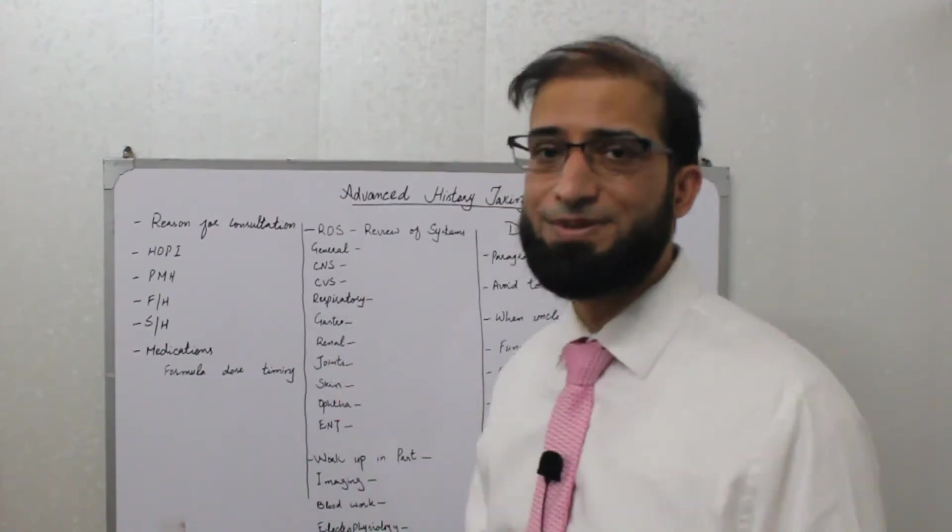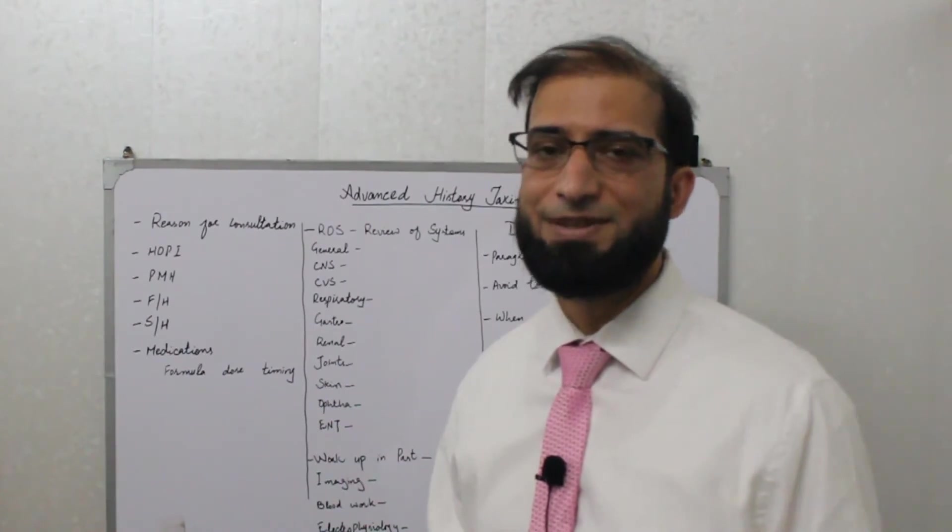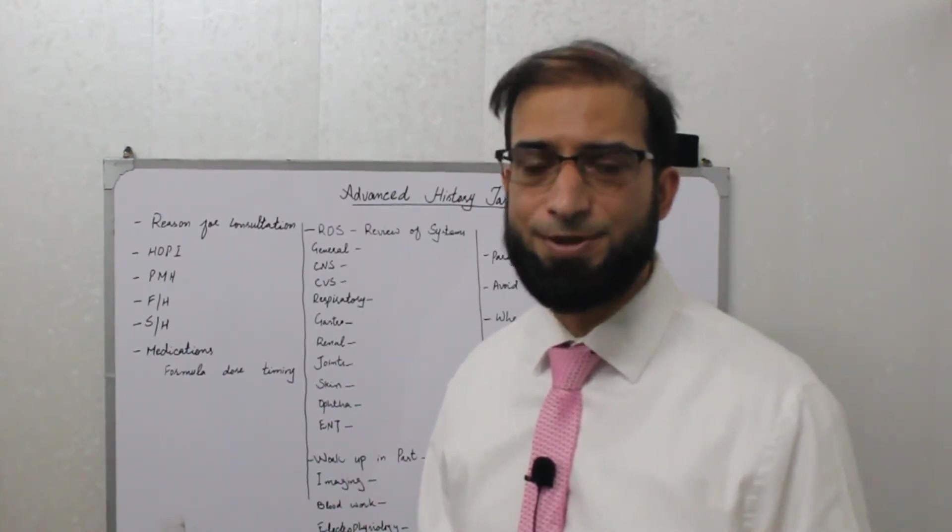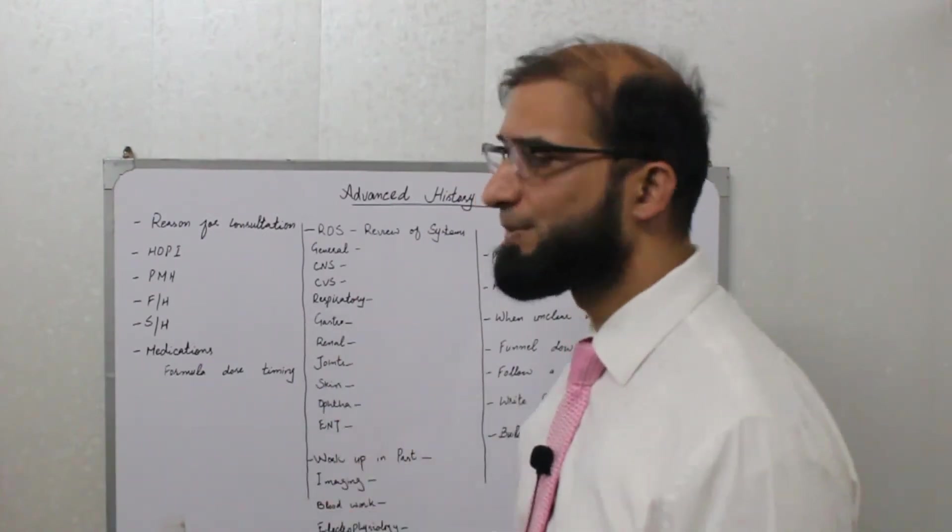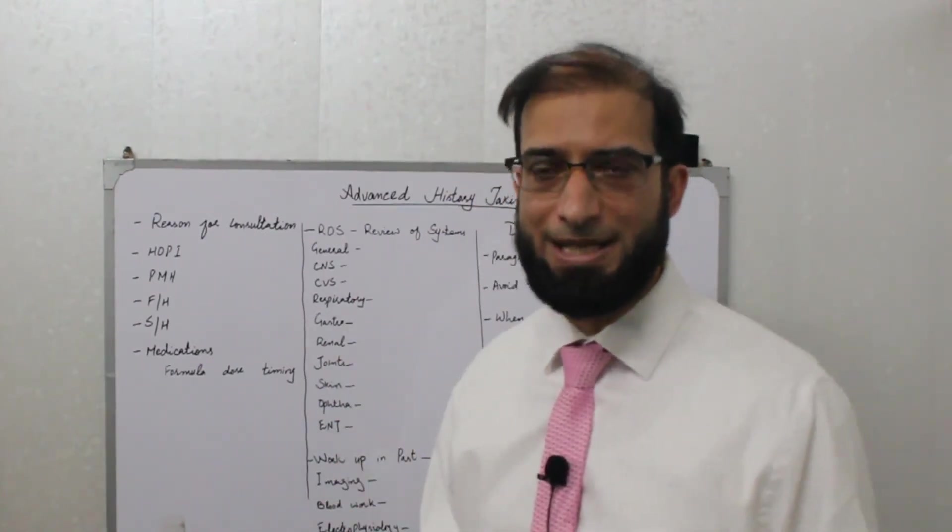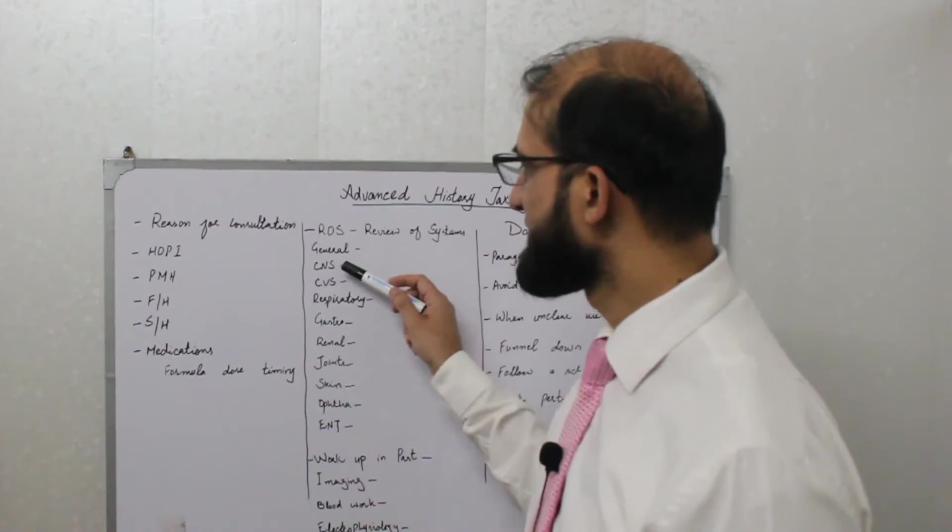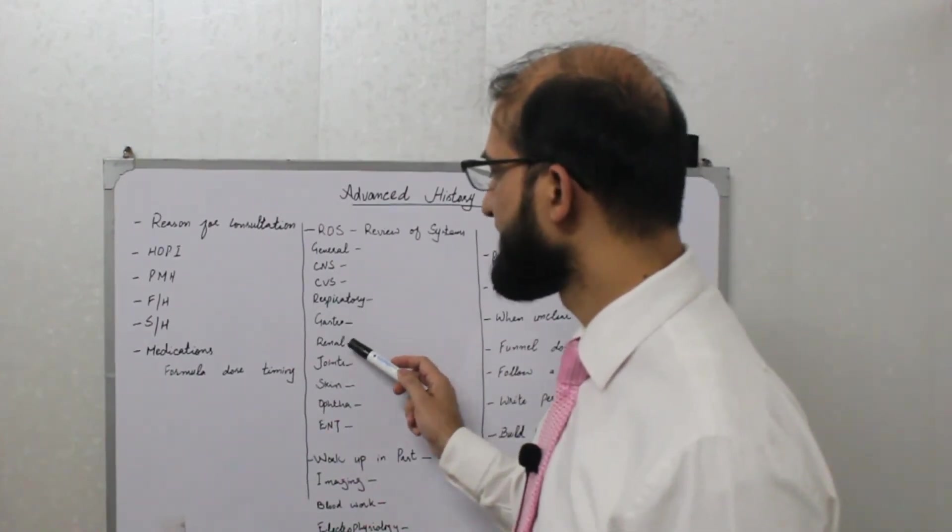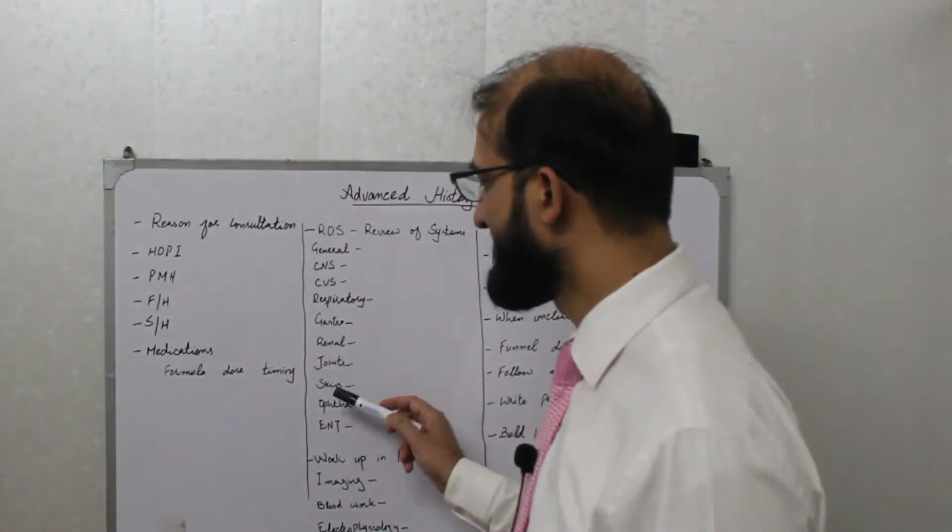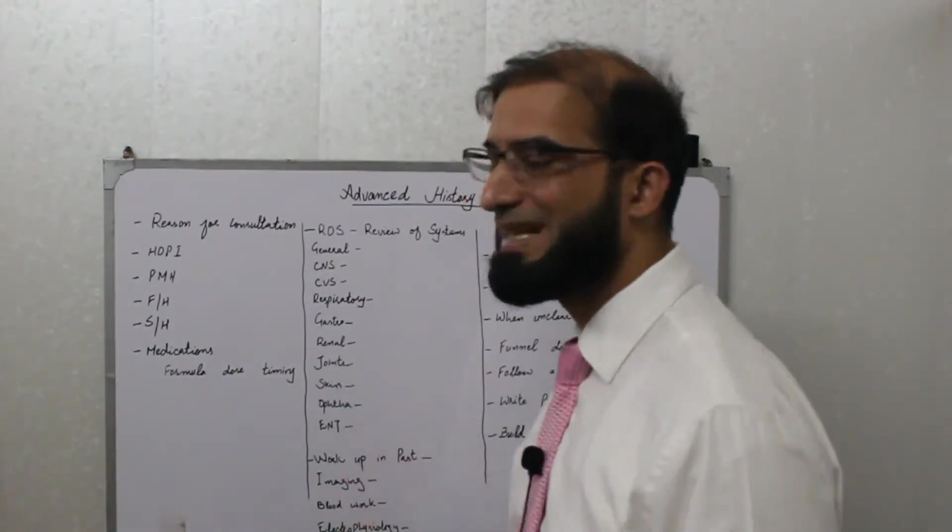So it could be the general symptoms is what we usually start with, if there is any weight loss and history of fever or sweating. It could be from top to bottom in any scheme you would like, but what I follow is central nervous system, cardiovascular, respiratory, gastrointestinal, renal, joints, skin, ophthalmology and ENT.